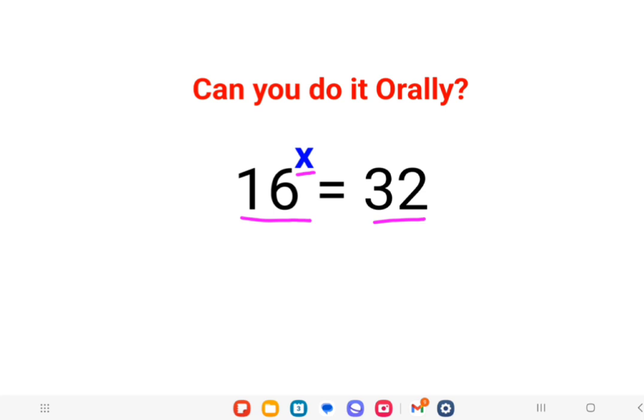Here what we have is 16 raised to x equals to 32. Now please understand this: 16 can be written in terms of what? 2 raised to 4, the whole raised to x, and 32 can be written as what? 2 raised to 5.